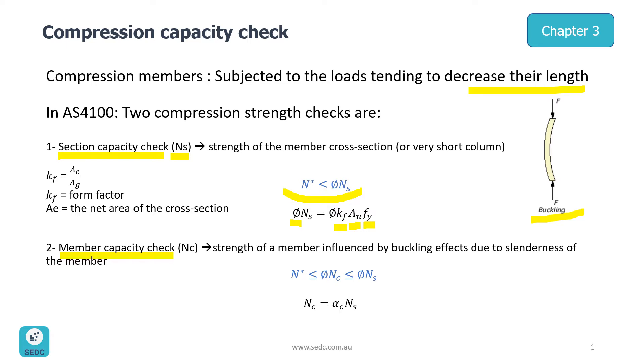Member capacity is defined as NC, which is a strength of the member influenced by buckling effects due to slenderness of the member.